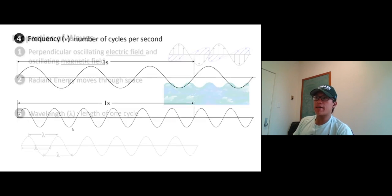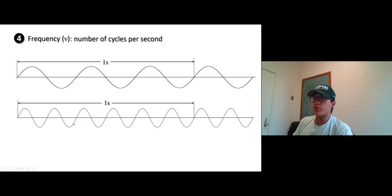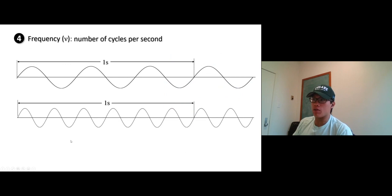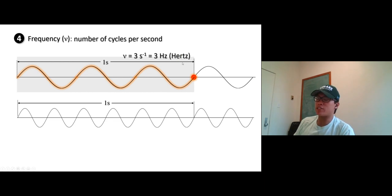And waves have frequency. Frequency is defined as the number of cycles per second. I'll go back here. So wavelength is the length of one cycle. But frequency is how many cycles that this wave can pass through in one second. For example, let's say if that is one second. How many cycles are there? One, two, and three. So this wave oscillates three times per second. So the unit of frequency is per second. Three times per second, or we call it Hertz. That's a scientist name Hertz. Not the car rental thing.